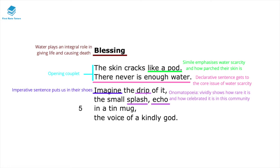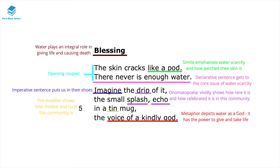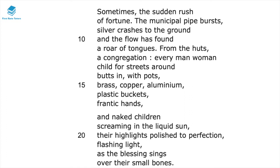This community is anonymous but we can comfortably assume it's likely in a third world country where access to water is not freely available. In line five the reference to a tin mug, where the pre-modifier 'tin' shows how modest and rural this community is. Furthermore, in line six there's 'the voice of a kindly God,' and this metaphor depicts water as a god — it has the power to take and also to give life.